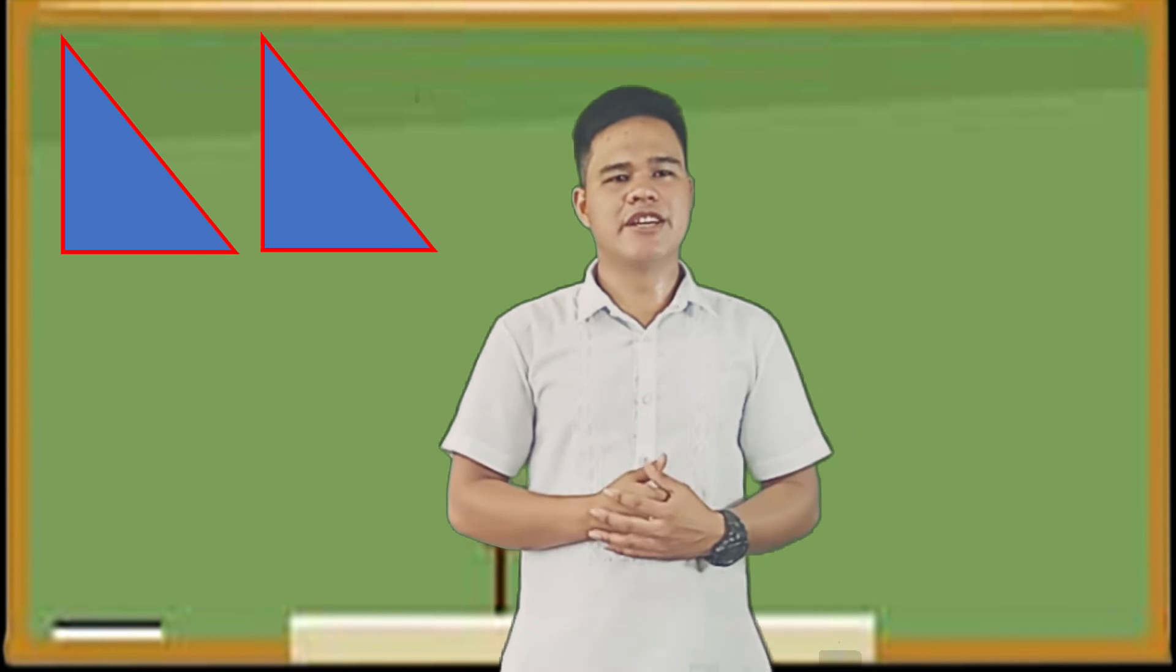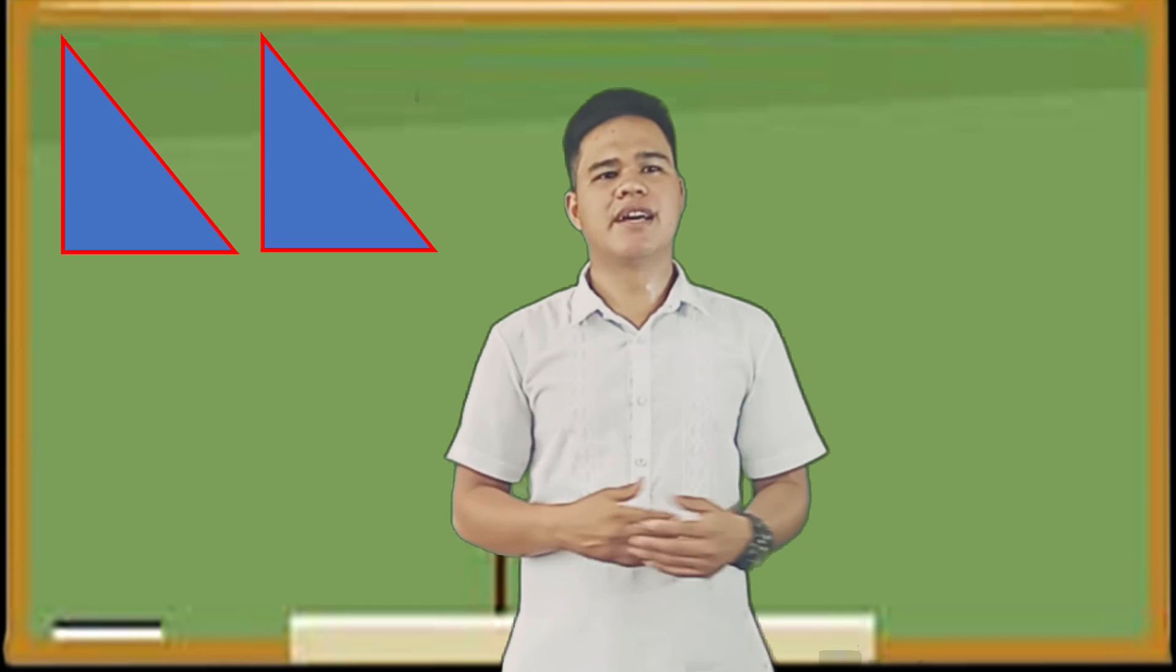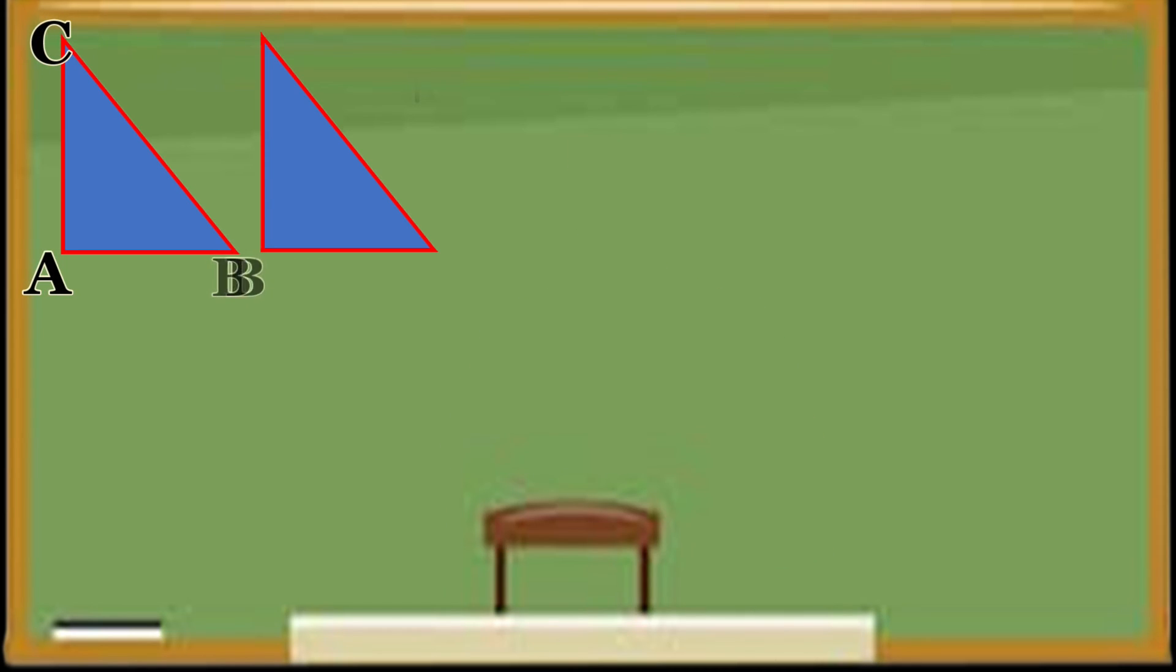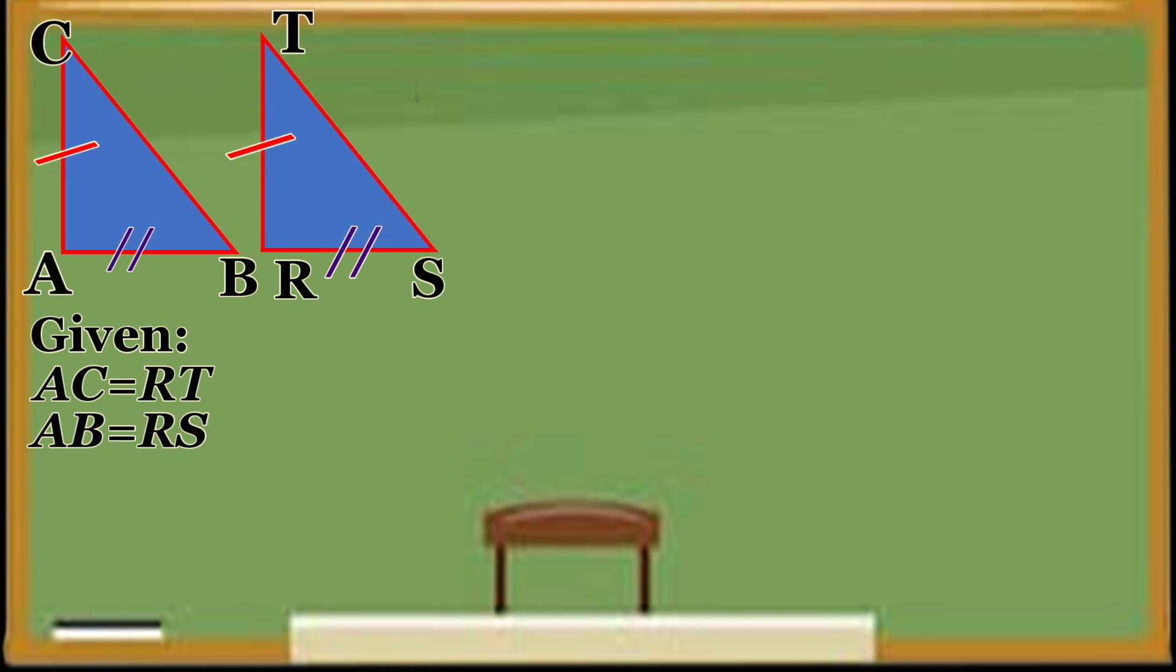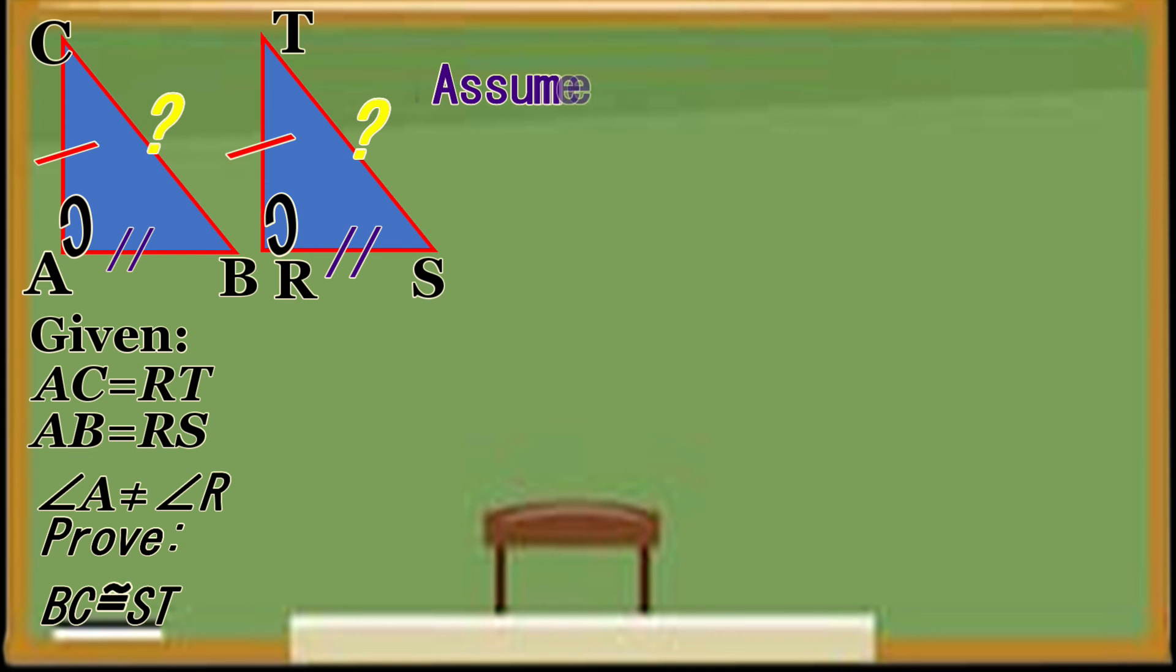Here we have two triangles: triangle CAB and triangle RES. We have the given that AC equals RP, AB equals RS, but angle A is not congruent to angle R. We are going to prove that BC is not congruent to ES.